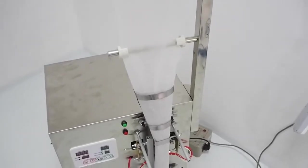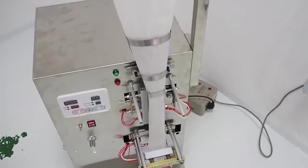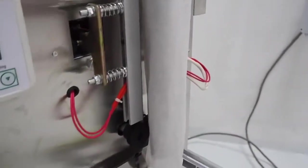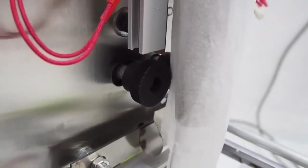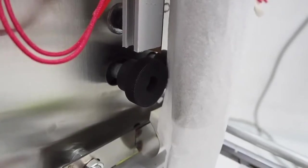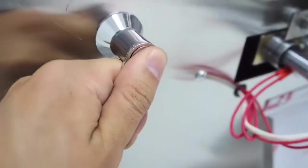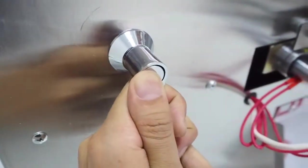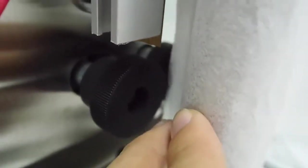Now that we have threaded the film through the bag forming mold, the next thing we need to do is to open the pulling wheel by this handle here. We open the wheel and then carefully tuck the edge of the film inside between the two wheels. Same for the other side. And then we close the pulling wheel.